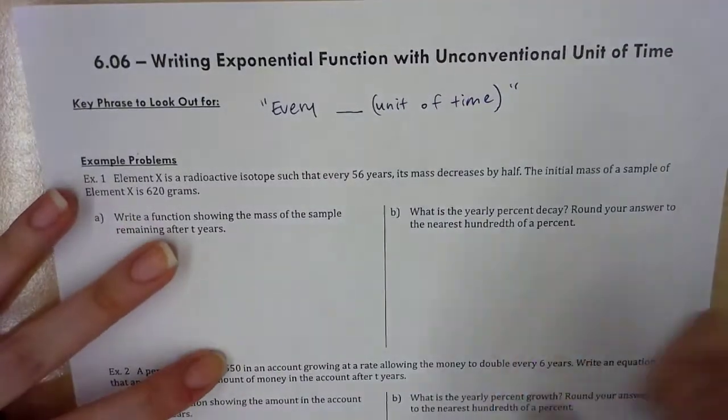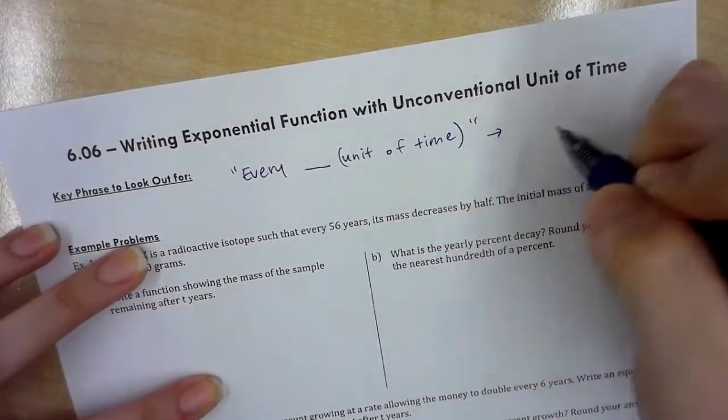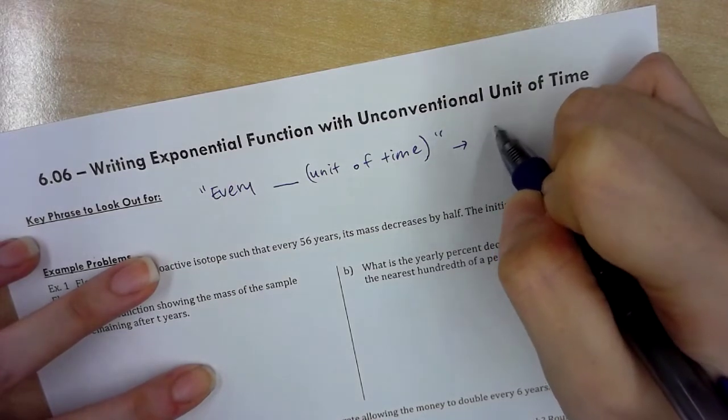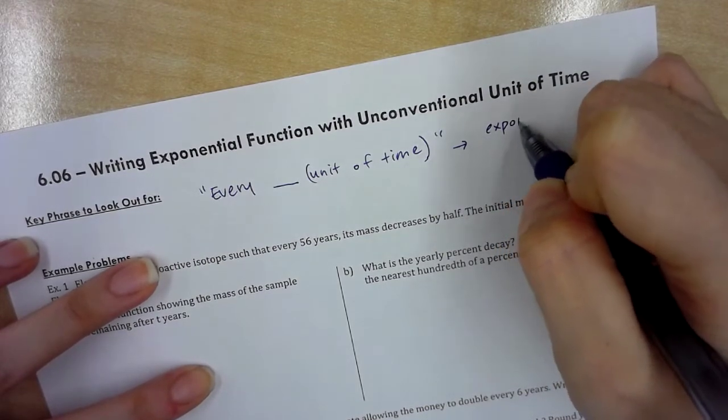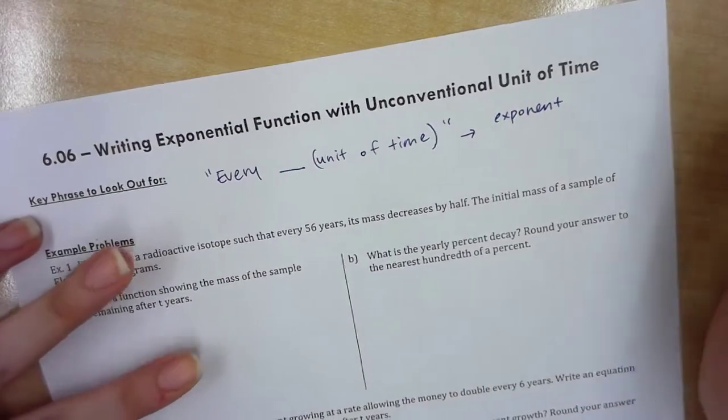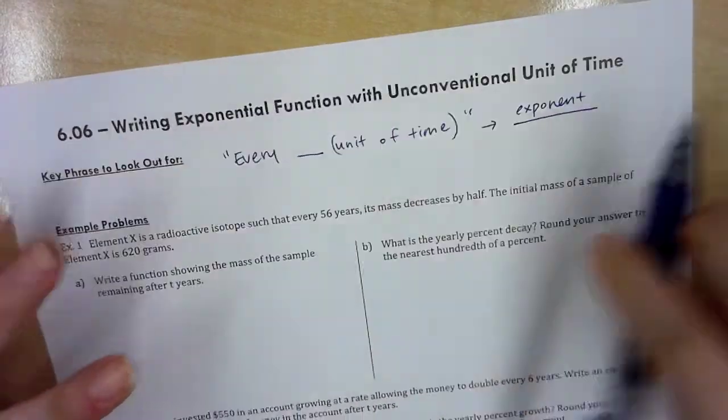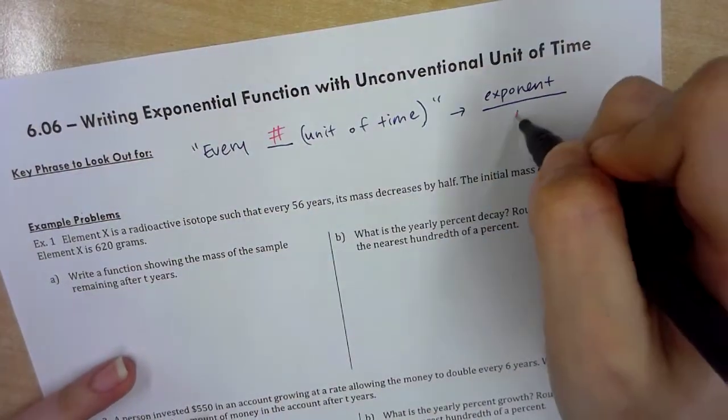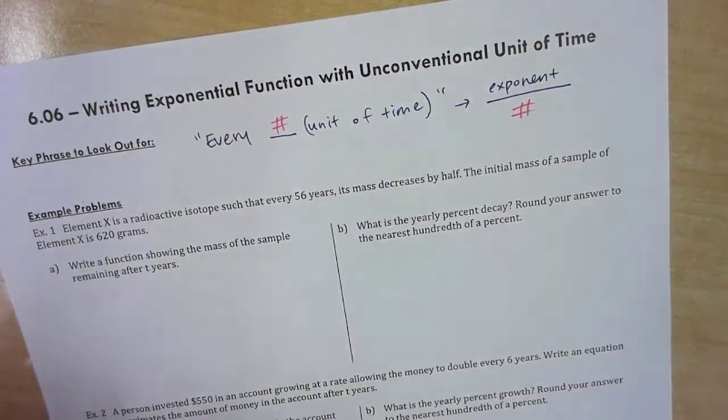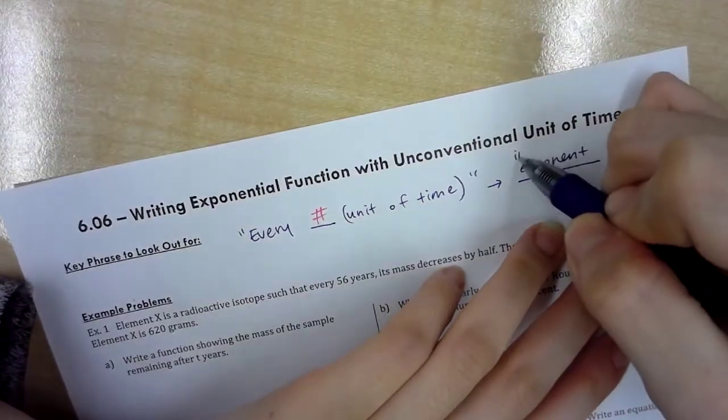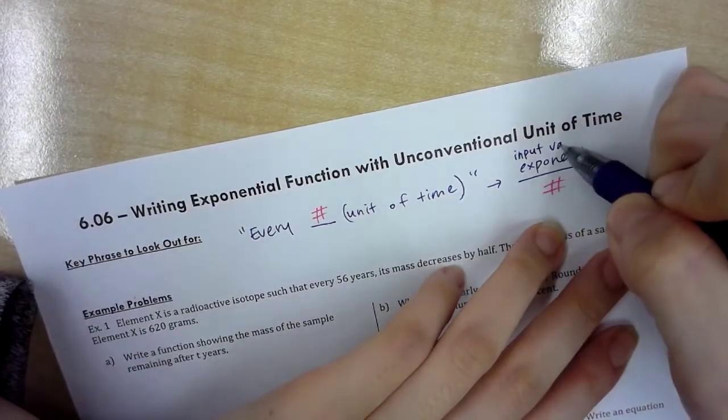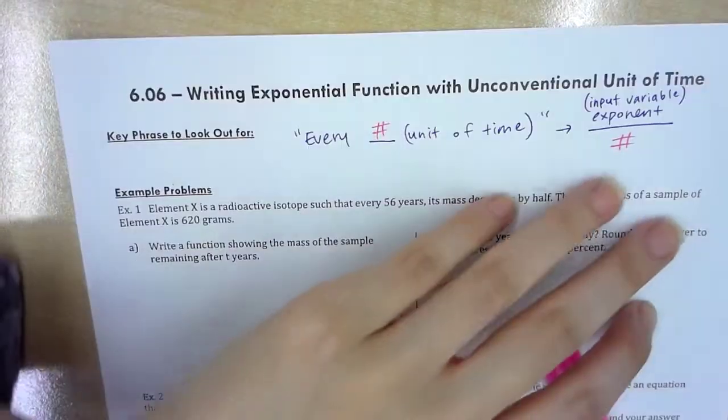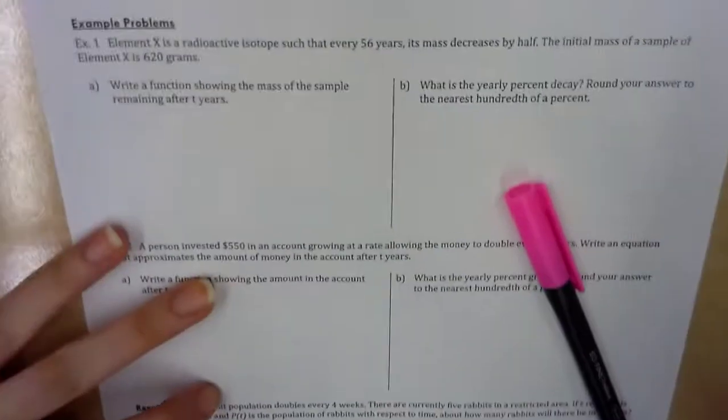So the key phrase that we're going to look out for today is every blank unit of time. And what this looks like is the exponent over this number. So exponent, input variable. Alright, so let's actually go through some example problems.